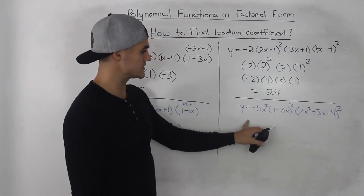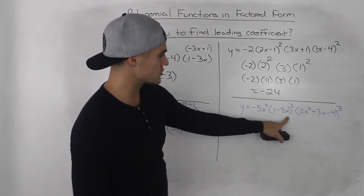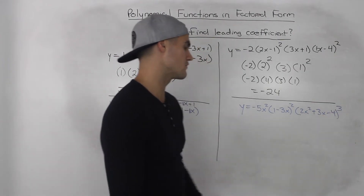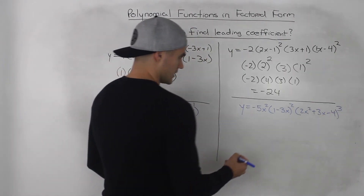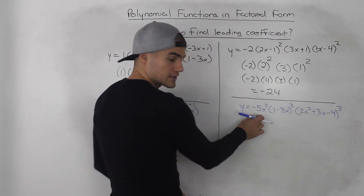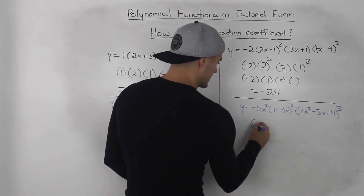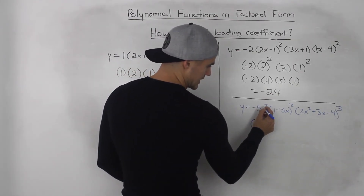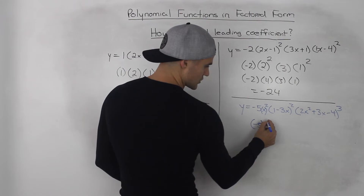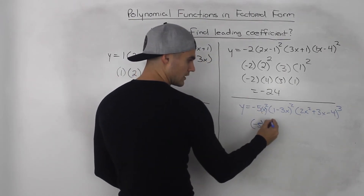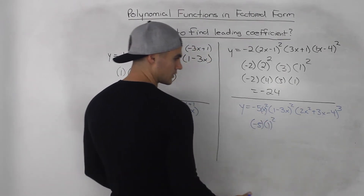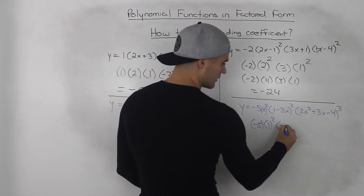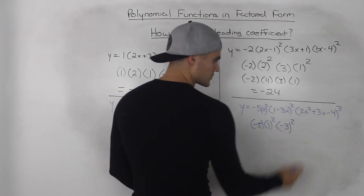Next example: y is equal to negative 5x squared, times (1 minus 3x) squared, times (2x squared plus 3x minus 4) to the power of 3. The first thing we do is take the number in front: negative 5. That's going to be multiplied to get the leading coefficient. Now this x squared is like x in its own bracket squared — the leading coefficient of x is just 1, and it's being squared, so we include that. The leading coefficient in (1 minus 3x) is negative 3, and that's also being squared.